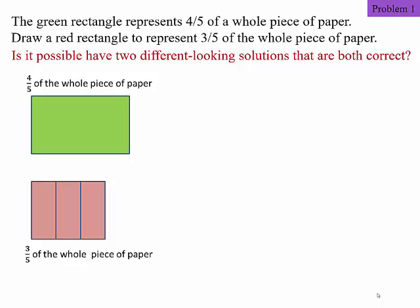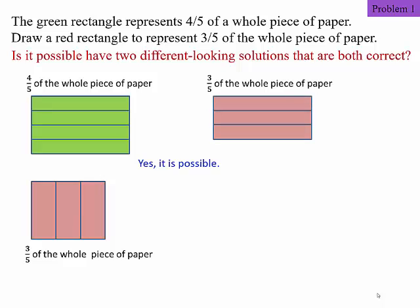Another way is to cut this green rectangle into four equal parts horizontally. This way. Now we want three-fifths. So that means we want three of the small pieces. So we can also get the same answer with a longer but narrower rectangle.